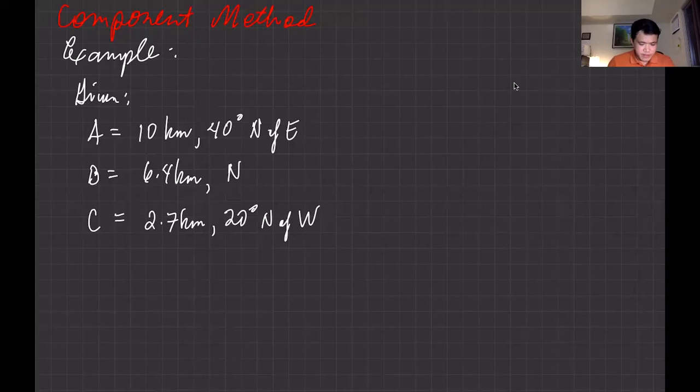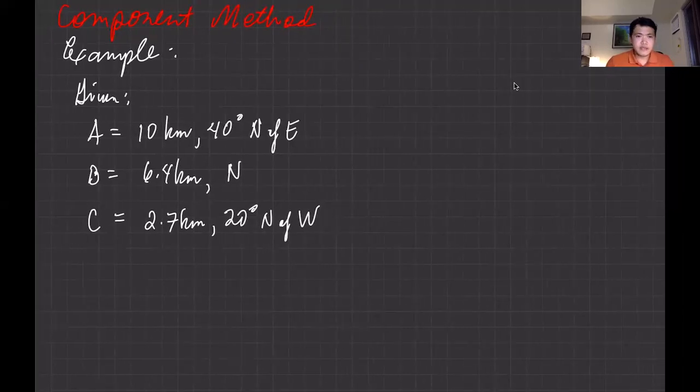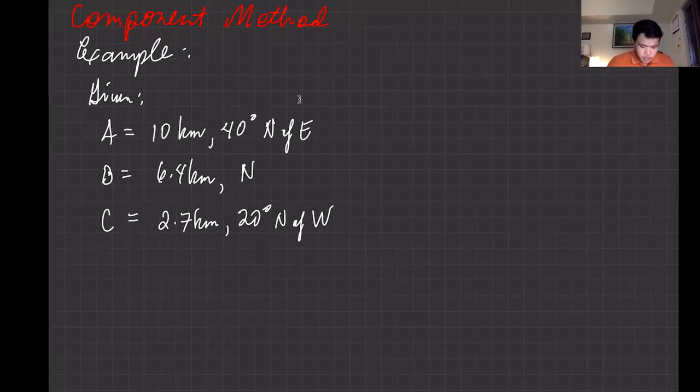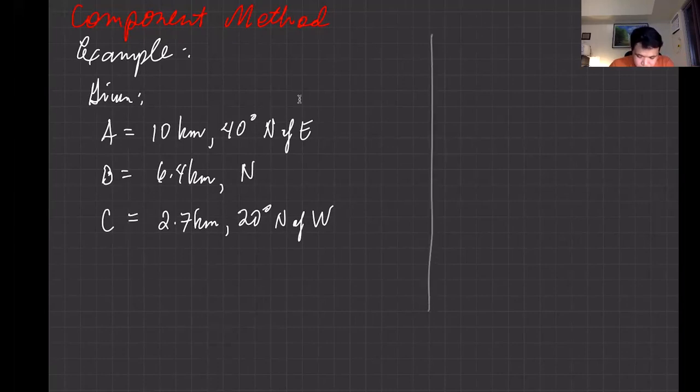I have some given variables here. Basically some of them are an approximation. You have vector A: 10 kilometers, 40 degrees north of east. Vector B: 6.4 kilometers north, straight. And then vector C: 2.7 kilometers, 20 degrees north of west. So let us now draw the coordinates.